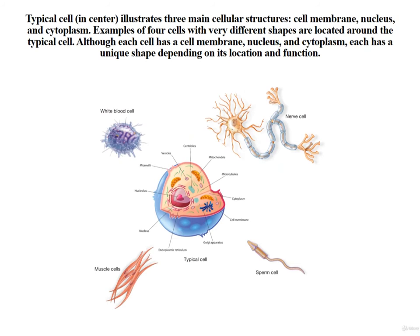This figure illustrates examples of four different types of cells from the body. Even though each different type of cell has a cell membrane, a nucleus, and cytoplasm, each one has a unique shape. This shape is dependent upon the cell's location and specific function.